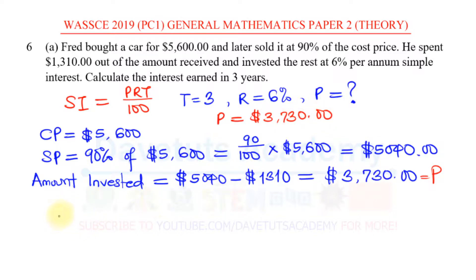Then we can find the simple interest to be, the principal is 3,730 times the rate, that's 6, multiplied by the time, that is 3, and we can divide by 100. So this is what we need to input into our calculator. 3,730 times 6 times 3 divided by 100.